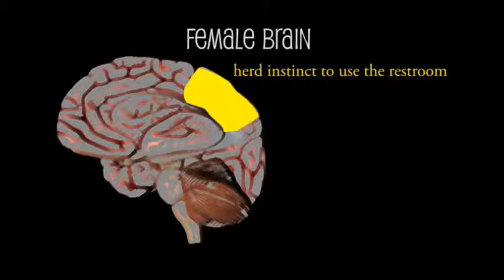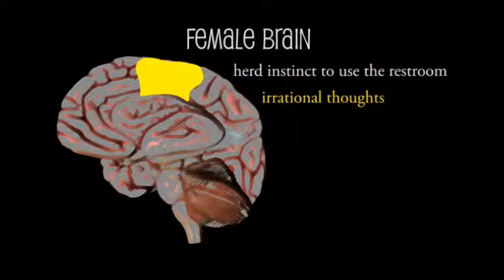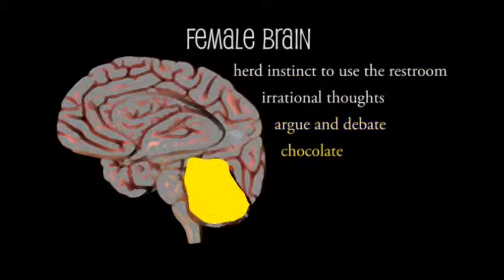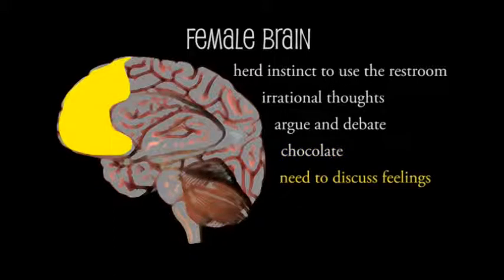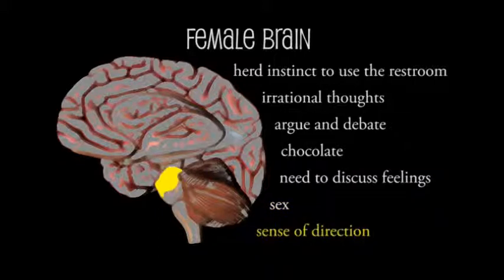There's the herd instinct to use the restroom together, the part responsible for irrational thoughts, the argue and debate lobe, the chocolate center, the need to discuss feelings nucleus, and the ever so small sex particle and sense of direction region.